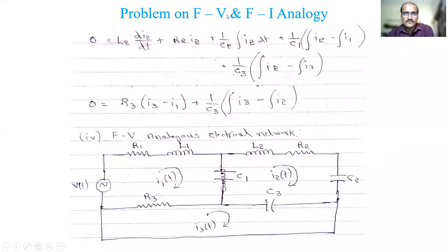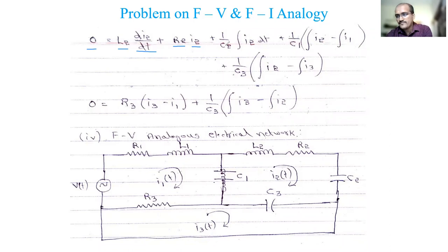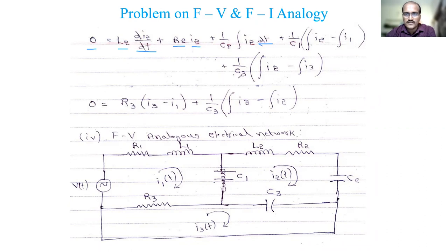Applying FE analogy to equation 2: 0 = L2·(di2/dt) + R2·i2 + (1/C2)·∫i2 dt + (1/C1)·∫(i2 − i1)dt + (1/C3)·∫(i2 − i3)dt. This is equation 5. Applying to equation 3: 0 = R3·(i3 − i1) + (1/C3)·∫(i3 − i2)dt. This is equation 6.